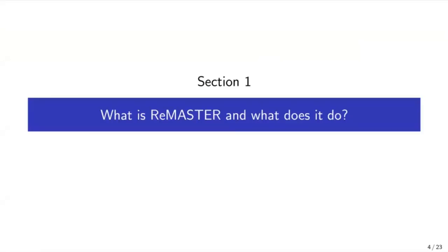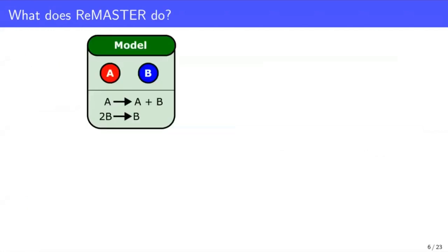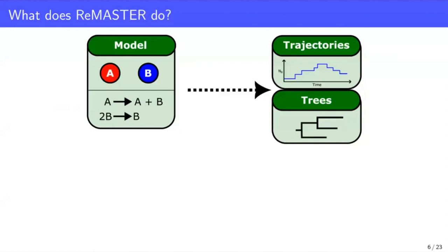So firstly, what is Remaster and what does it do? The first thing you need to know about it is that it's a BEAST2 package, a package that runs on another piece of software known as BEAST2 that is a more general purpose phylogenic and phylodynamic inference software platform. In terms of Remaster itself, the idea is that you conceptualize some model. I'll get into the details of this later on. And using Remaster, you can generate simulated realizations of population dynamics through time, and the trees that relate sampled individuals from those populations.